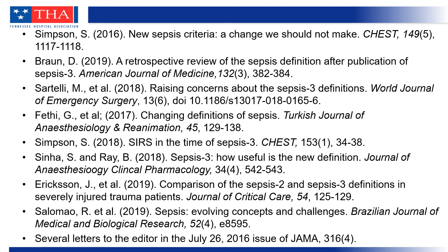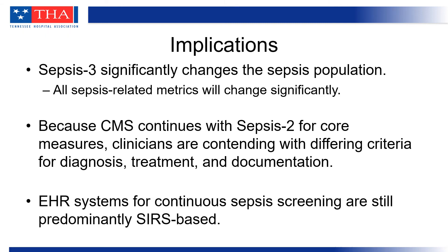There is a handful of articles available for those interested in reading more about the controversy between SIRS and SOFA and the two different definitions of sepsis. The implications are significant: sepsis 3 significantly changes the sepsis population, so all sepsis-related metrics tracked by a hospital or clinician will change significantly, whether financial, core measure related, or patient outcome related.